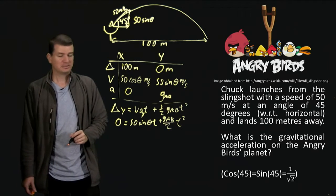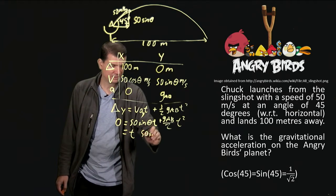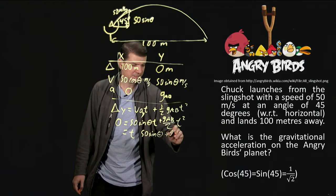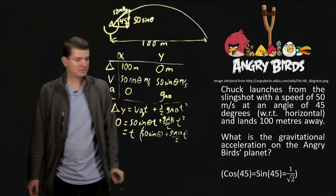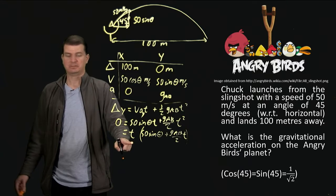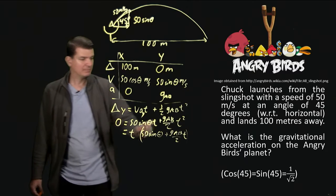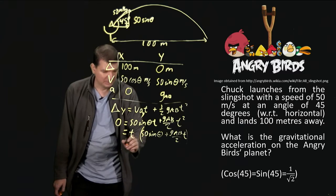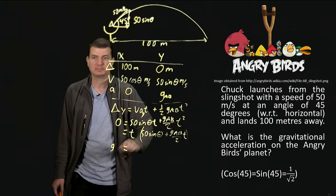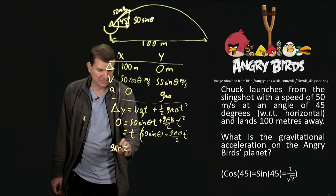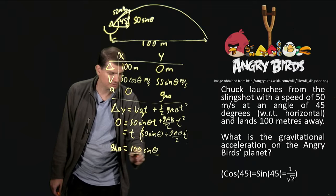So this is actually easily factored to t times 50 sine theta plus g_ab on two. And there's a t still there. So this has two solutions. Either the first thing is zero, so t equals zero. That's unexciting because then we haven't gone anywhere and haven't learned anything. Or this part is zero, which means that if we solve that, say, for g_ab, so we demand that this thing be equal to zero and solve for g_ab, then g_ab has to equal 100 sine theta on t.